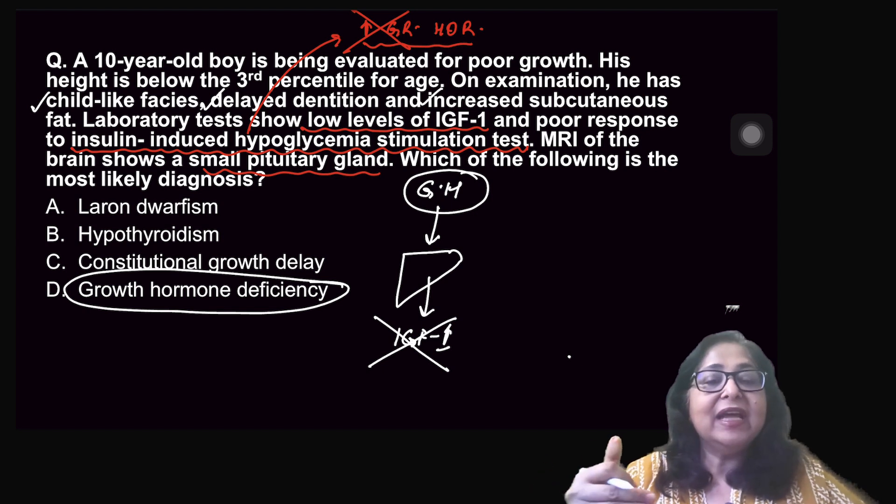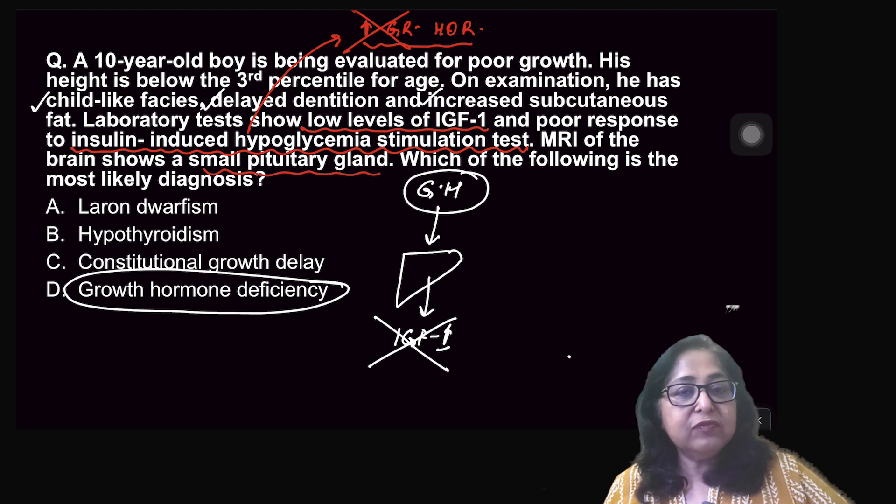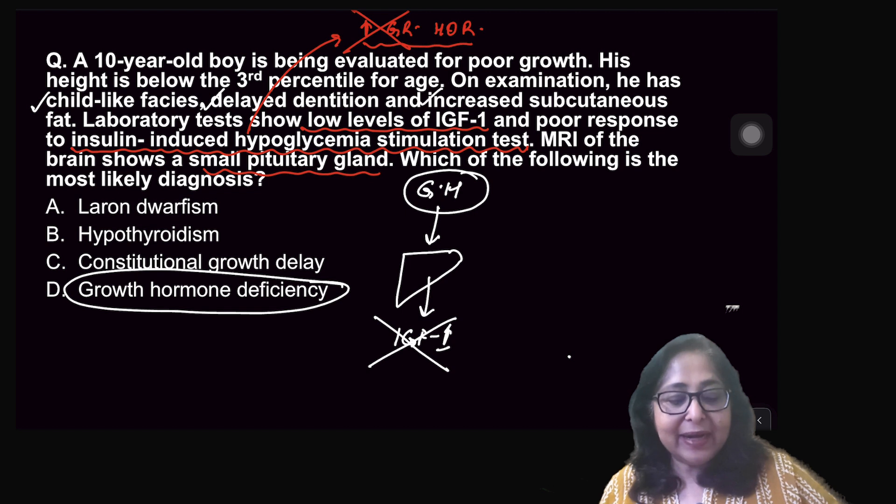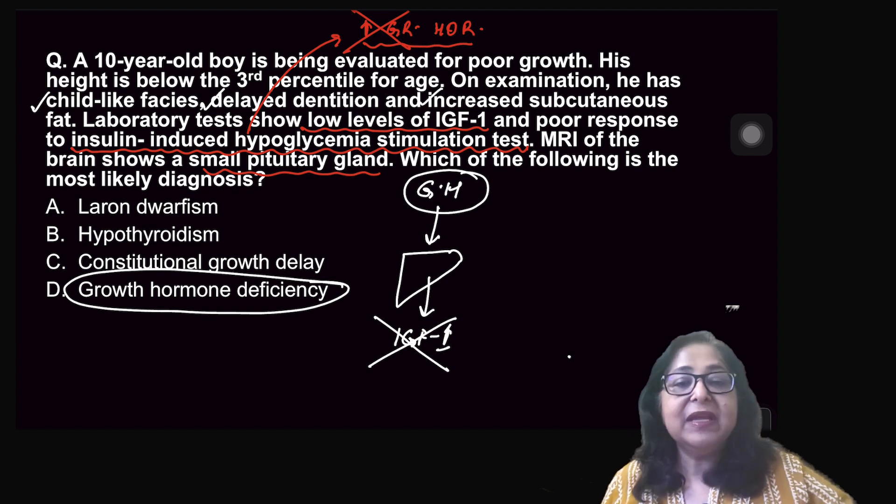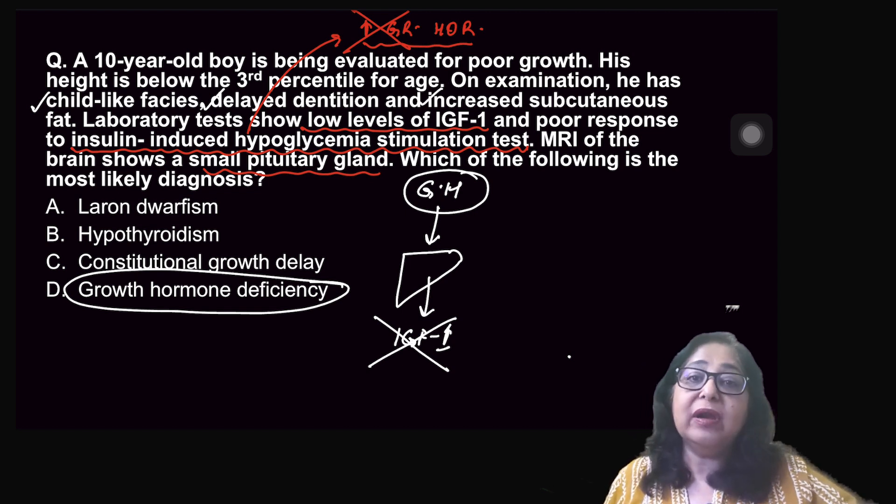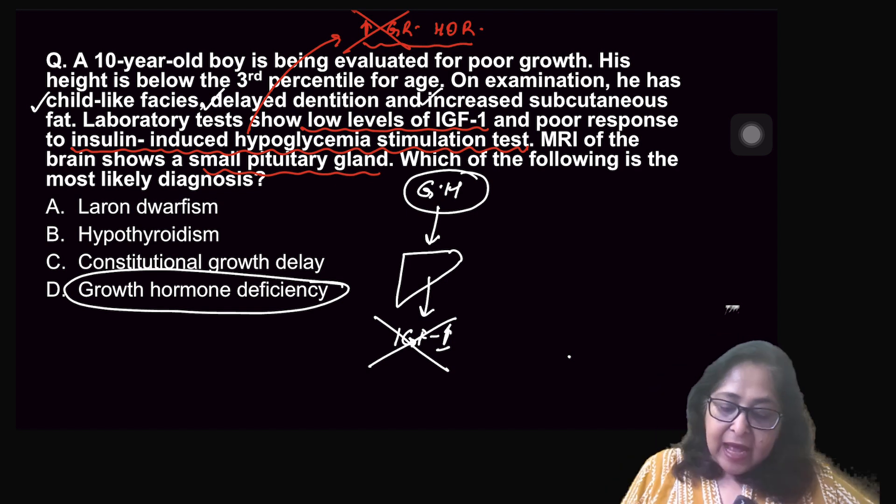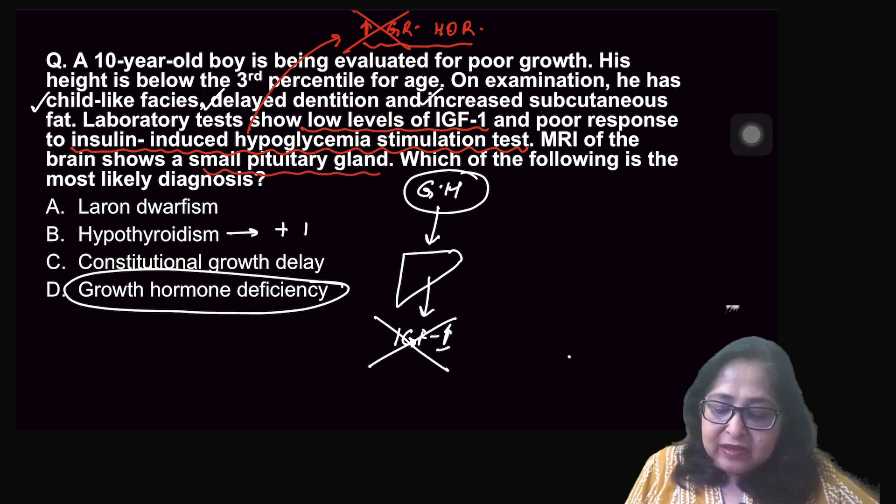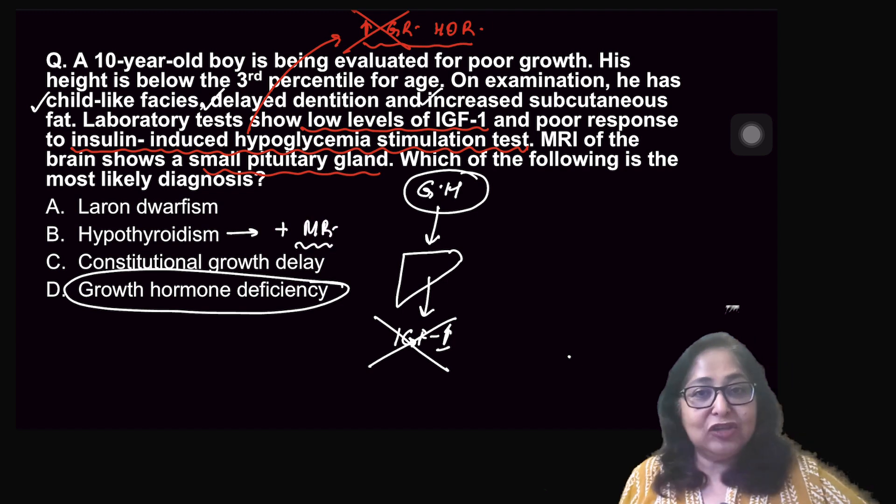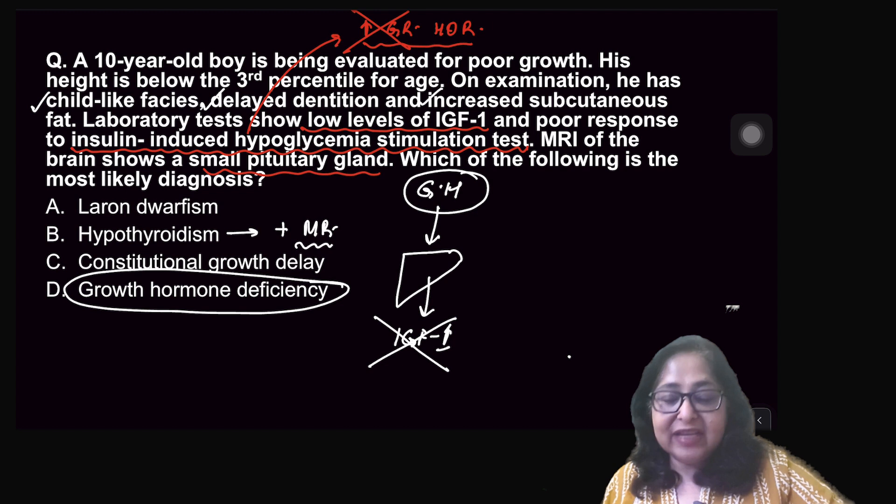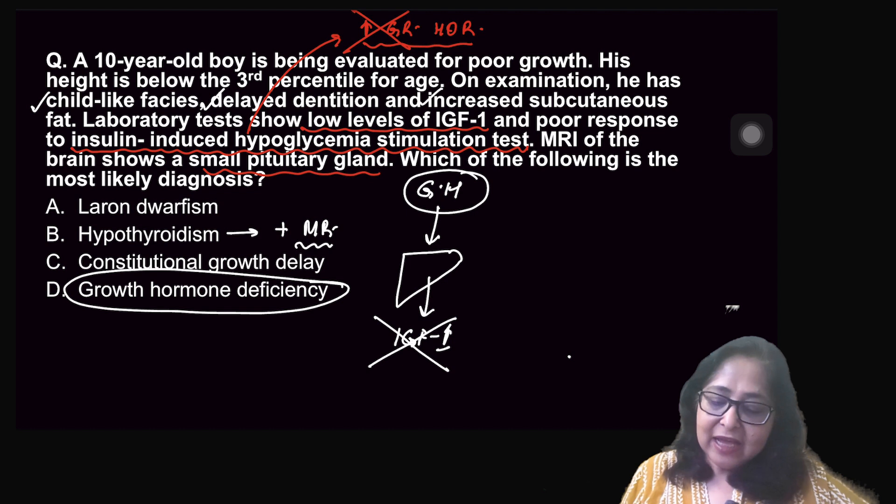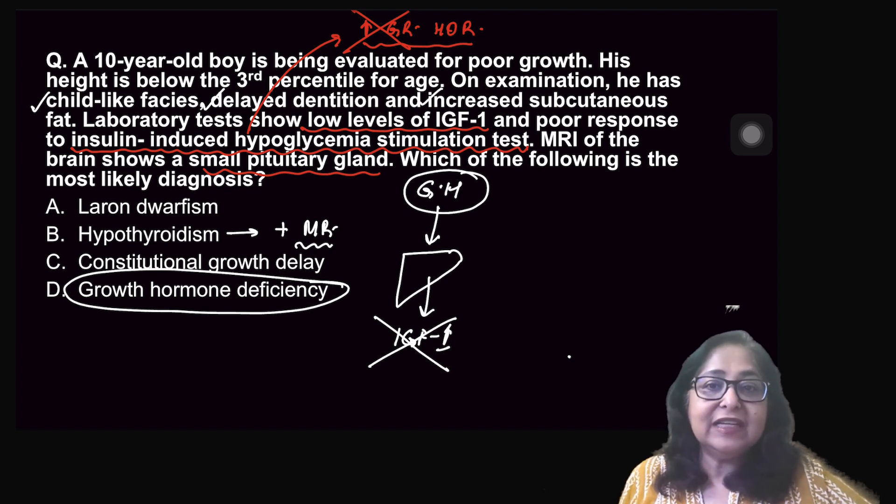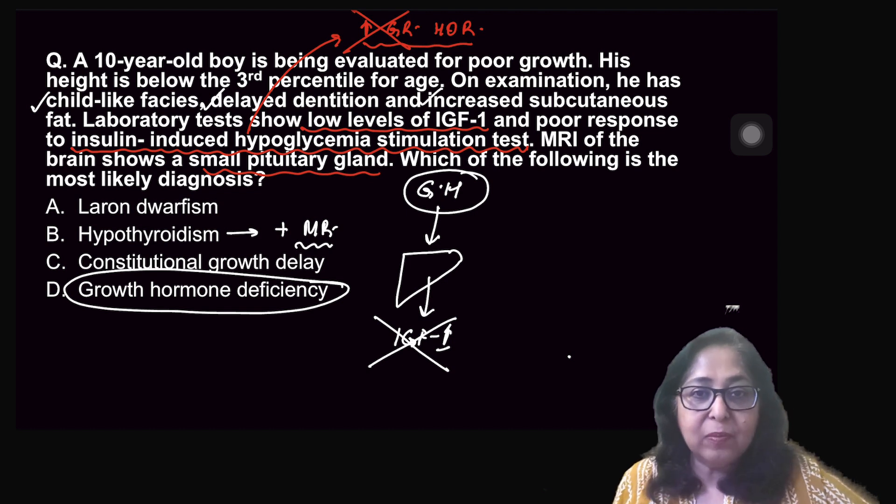A small pituitary gland is pointing more towards a growth hormone deficiency rather than Laron dwarfism. Laboratory tests will help us distinguish because in growth hormone deficiency, low GH and low IGF-1 levels. But in Laron dwarfism, GH levels may be normal or even high. Hypothyroidism dwarfism is associated with mental retardation, so the history is not pointing towards that. Plus, the small pituitary gland gives us a definitive diagnosis of growth hormone deficiency.